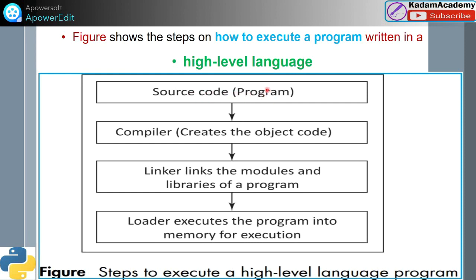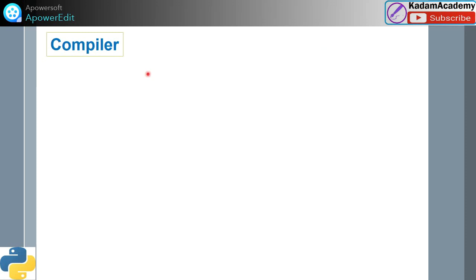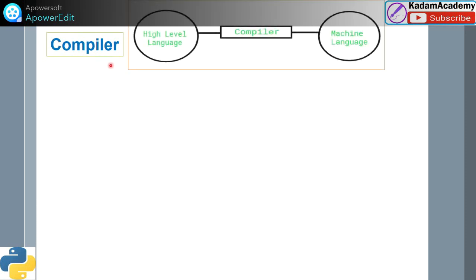In the figure for high-level language execution: the source code is passed to the compiler, which creates the object code. Then the linker links the modules and the libraries or sub-programs required. After that, the loader executes the program into memory. This is the actual process happening in the computer. The compiler is a software that connects high-level language with machine language.